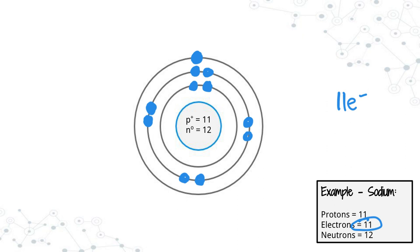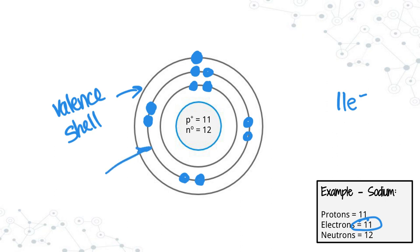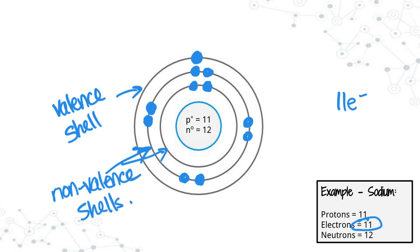The shell with electrons furthest away from the nucleus is called our valence shell, which will become very important when we talk about ions and how ions form. All the shells on the inside — in this case the first and second shells — are called non-valence shells or inner shells. As long as there are eight electrons in the second shell, that's all that matters for this course.